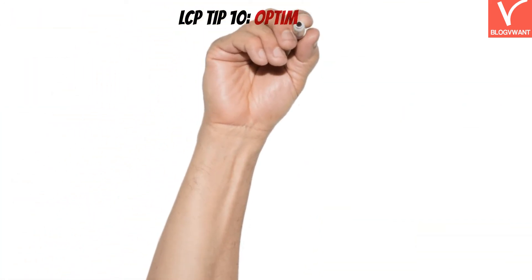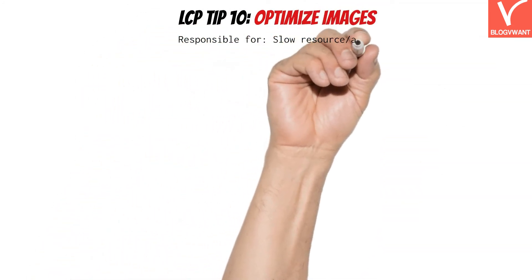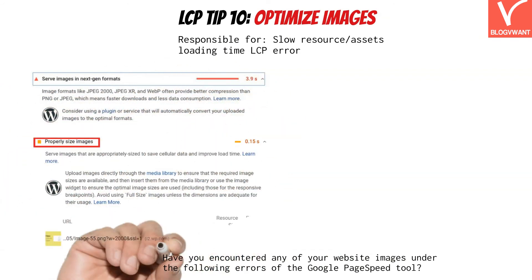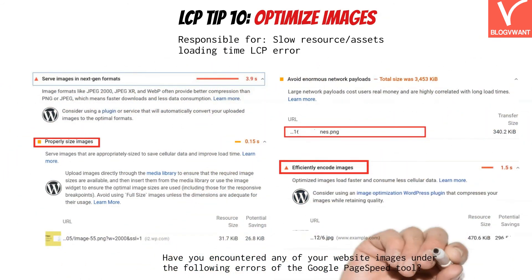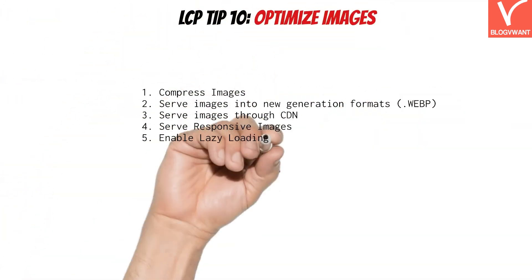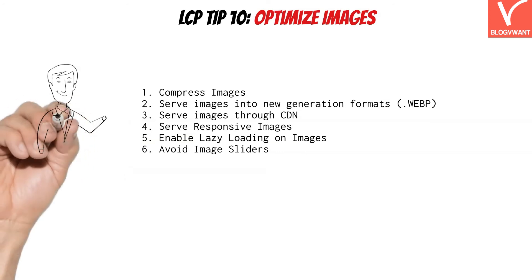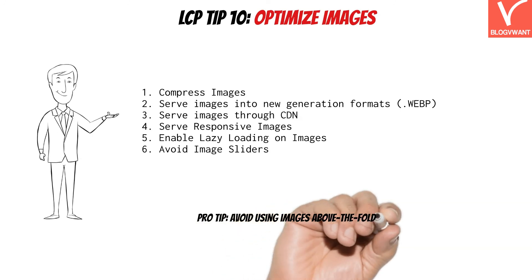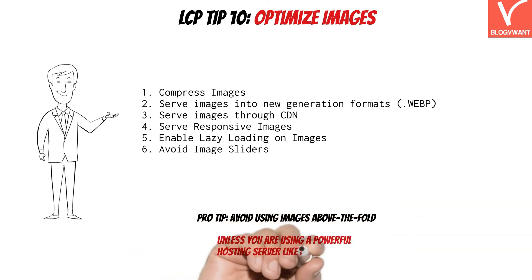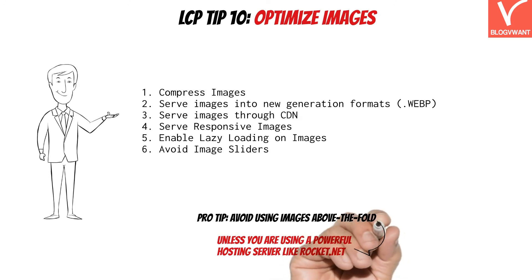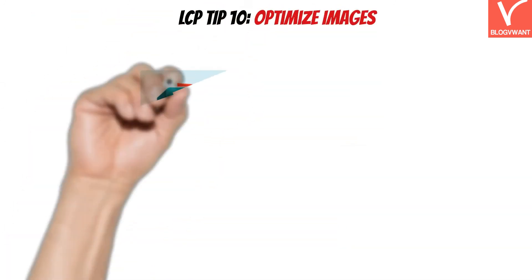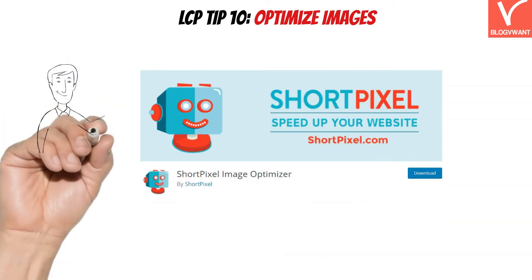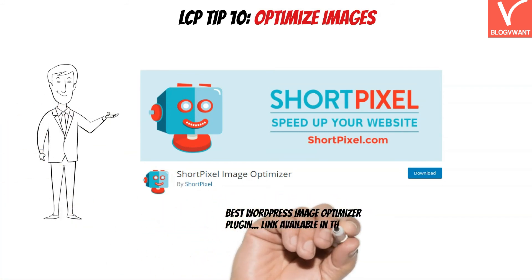LCP Tip 10: Optimize Images. Images are often the largest element on a web page and should load at lightning fast speed, otherwise your LCP score is impacted badly. There are several best practices to optimize images, and a pro tip: avoid using non-optimized or uncompressed images above the fold content area, as they directly impact loading time and hence LCP. To implement all these image optimization techniques, you can use a plugin like ShortPixel — by installing ShortPixel on WordPress, all images on your site will be compressed and load at rocket speed.